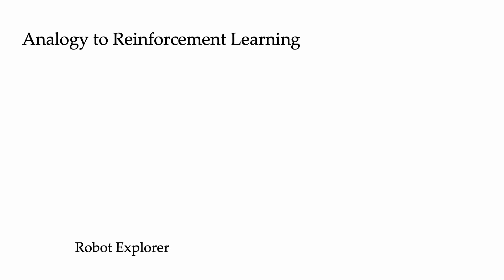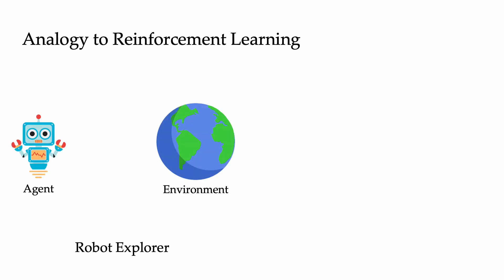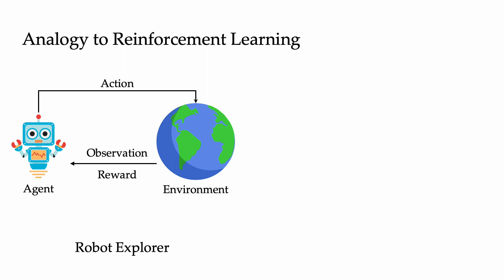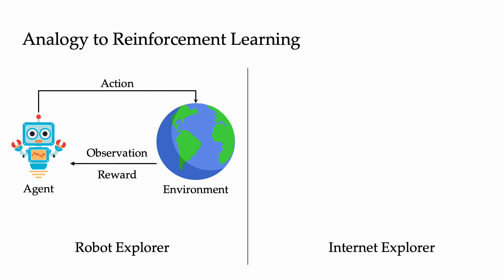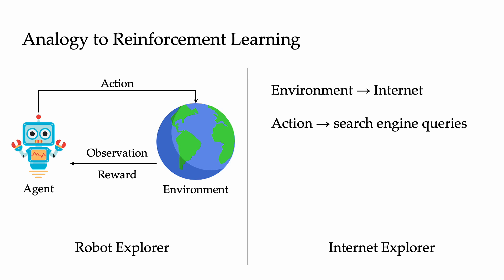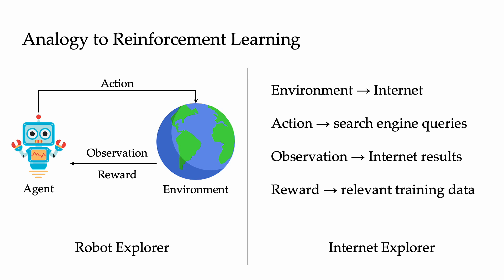For our robot explorer, an agent needs to interact with the environment by choosing actions and getting back observations and rewards. In order to maximize its return, it needs to iteratively explore to find the best plan of action. Similarly, our Internet Explorer agent interacts with an environment — that's the Internet. It takes actions that are search engine queries, and it gets back observations that are Internet search results. Finally, it has to maximize the reward, which is the relevance of the downloaded training data.